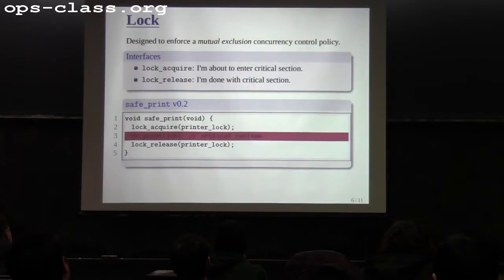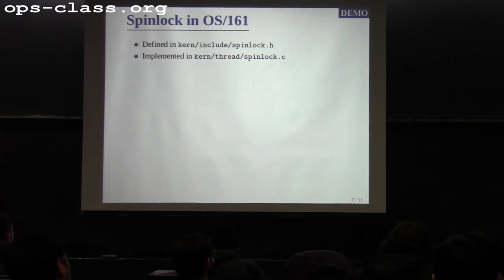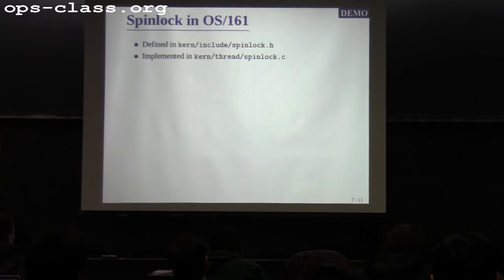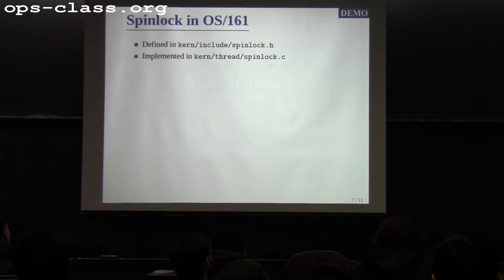OS161 already provides a spin lock for you. As I explained, this version of the lock doesn't do anything smart — it just keeps polling the lock until it's available. It's defined in the header file spinlock.h and implemented in spinlock.c. This one has already been implemented for you; you just need to understand how it works. You don't have to write any code for this. Let's take a look at the actual code.